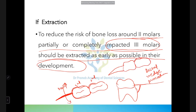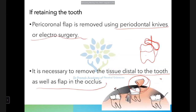Alternatively, you can give two parallel incisions starting from the second molar on the buccal aspect and extending distal to the third molar. In summary: first treat pericoronitis acutely to relieve symptoms, then decide on retention or extraction. If extracting, ensure no bone loss around the second molars — treat with the distal wedge procedure if needed. If retaining, excise the pericoronal flap including the distal tissue.